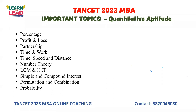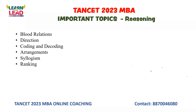You already have a TANCET or NDA syllabus and TANCET MCA syllabus, so there are common topics. Make sure to cover unique topics in between. For reasoning, the important topics are: blood relation, direction, coding and decoding, arrangements, syllogism, and banking. Be thorough with these six topics first, then go with the remaining topics.